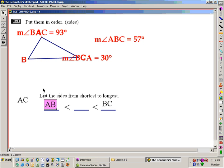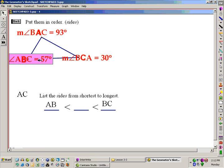So this must be the smallest of the size, or the shortest. And the middle-sized angle, angle B, 57 degrees, will be opposite the middle-length side, AC.